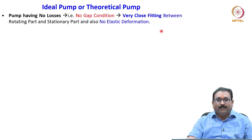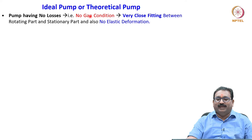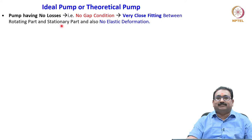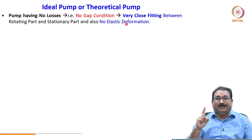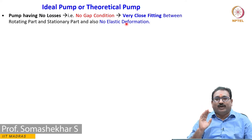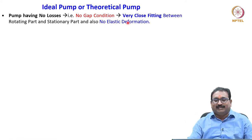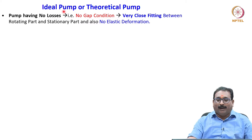Please note friends, a pump having no losses means no gap condition — meaning a very close fitting between the rotating part and the stationary part — and also no elastic deformation. Whenever there is a moving element, clearance should be there, but assume there is no gap between the rotating element and the stationary element and no elastic deformation, which is a prime requirement in the ideal pump.